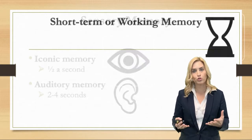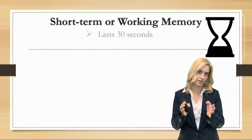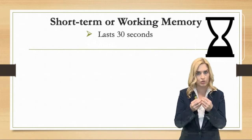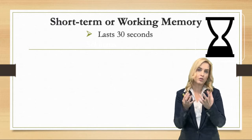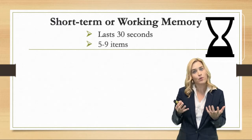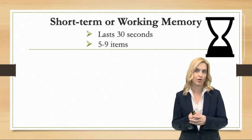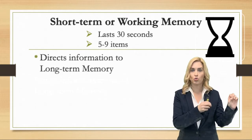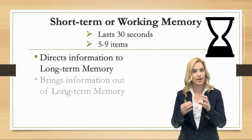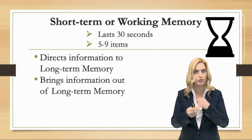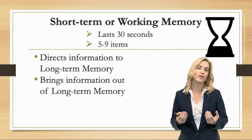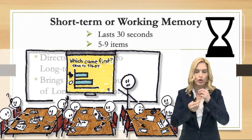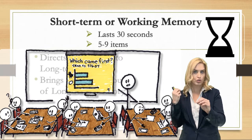With working memory or short-term memory, we're talking about 30 seconds — that's about all we have. We can also hold about five to nine items, about the same number as we have in our phone numbers or social security numbers. What working memory does is direct information into our long-term memory. It also brings information out of long-term memory for us to use — so as you're learning things in class, listening and watching the PowerPoint slides, your working memory is storing that into your long-term memory.